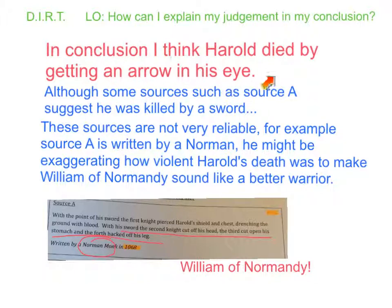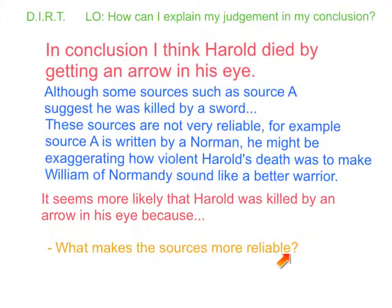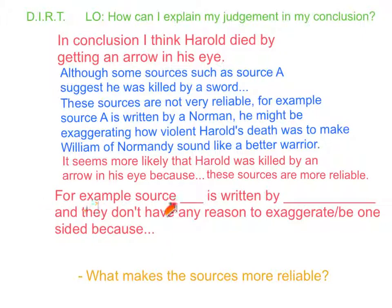Now we need to explain why we're more convinced that he was killed by an arrow in his eye. So we can add the sentence: it seems more likely that Harold was killed by an arrow in his eye because... Well why is it more likely? You need to explain what makes these sources that say he was killed by an arrow in his eye more reliable. For example, whichever source you happen to choose — who is it written by? And they don't have any reason to exaggerate or be one-sided because... So you need to choose a source written by someone who doesn't have a reason to exaggerate or be one-sided, and explain why they don't have a reason to be one-sided.